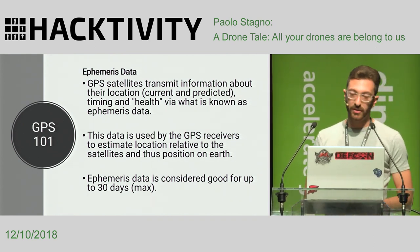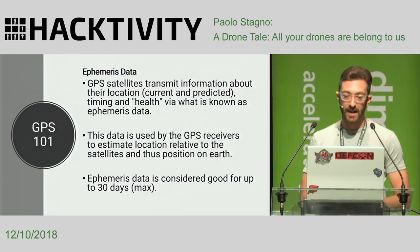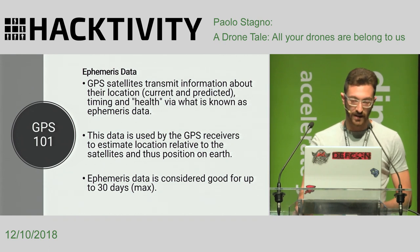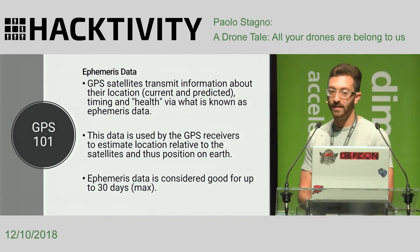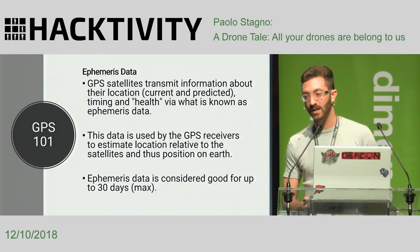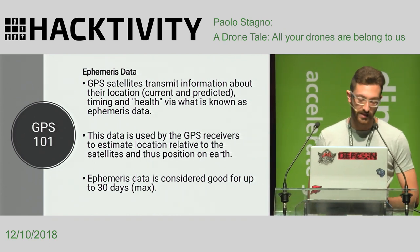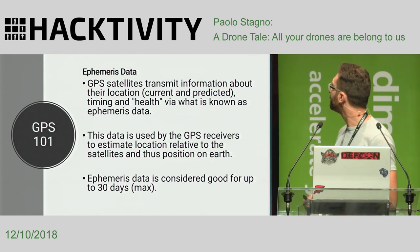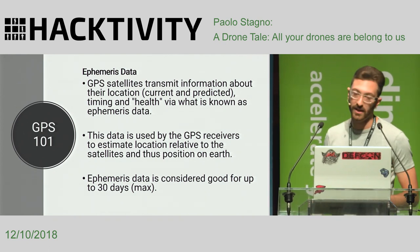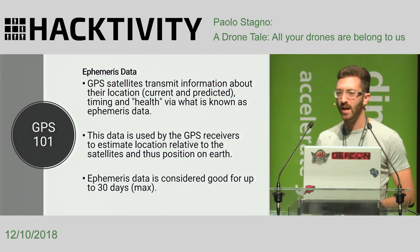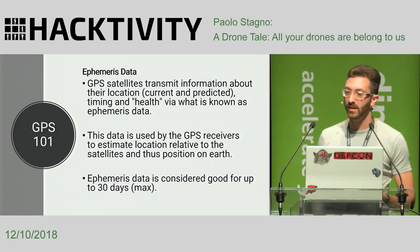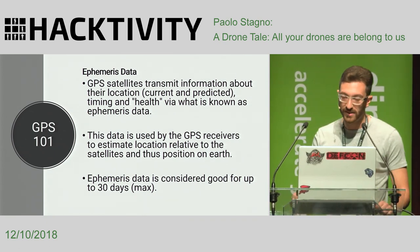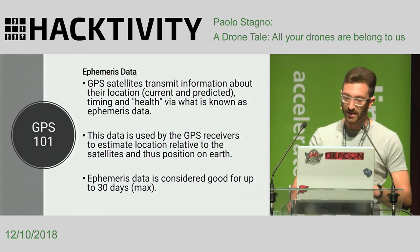Before generating a GPS signal, we need to gather ephemeris data — data containing information about the current and future location of satellites. Ephemeris data can be freely obtained from the NASA website. Usually you should download new ephemeris data every 24 hours, even though they are considered valid for up to 30 days. The first time I tried to perform a GPS attack, I was using really old ephemeris data and wasn't able to spoof GPS signals, so I recommend always downloading the latest ephemeris data.